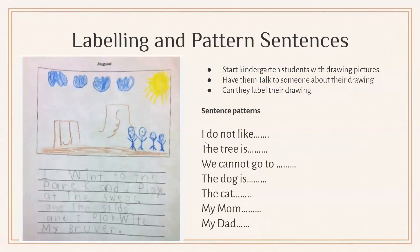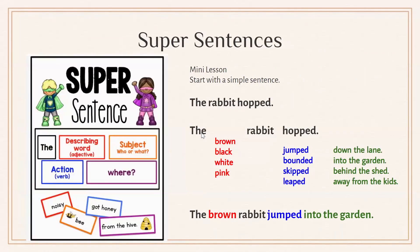In the early grades, labeling and pattern sentences are very useful. In kindergarten, students can draw pictures, and as they become more familiar with words they might start labeling their pictures and then using pattern sentences. However, we don't want kids to get locked into pattern sentences — we want to encourage them to move away from them quickly. Some students become very dependent on pattern sentences and their writing becomes only 'I like mom, I like dad, I like my cat,' which is fine in the beginning but we want them to move beyond that quickly.